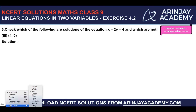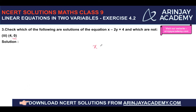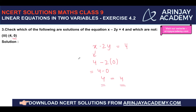For (4, 0): substituting x equals 4 and y equals 0 gives 4 minus 2 into 0, which equals 4. Since the left-hand side equals the right-hand side, we can say that (4, 0) is a solution of the linear equation x minus 2y equals 4.